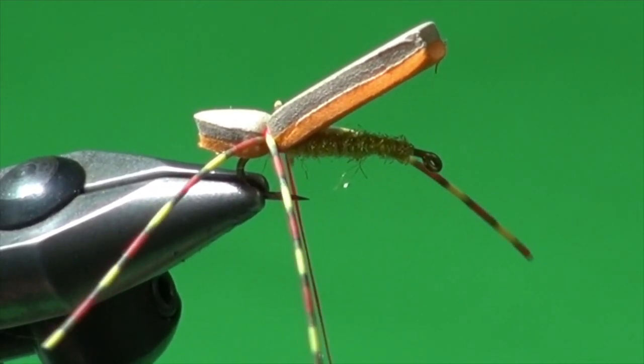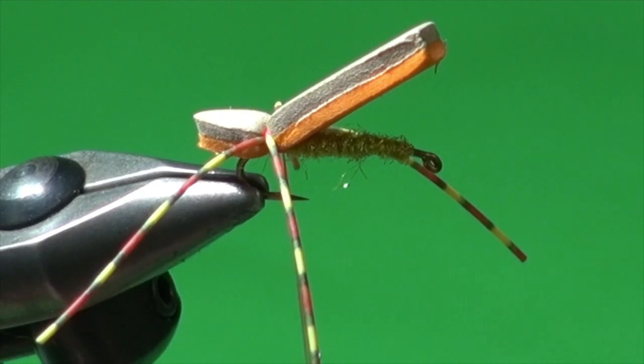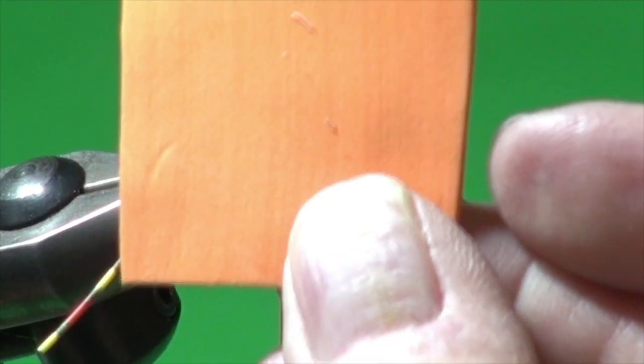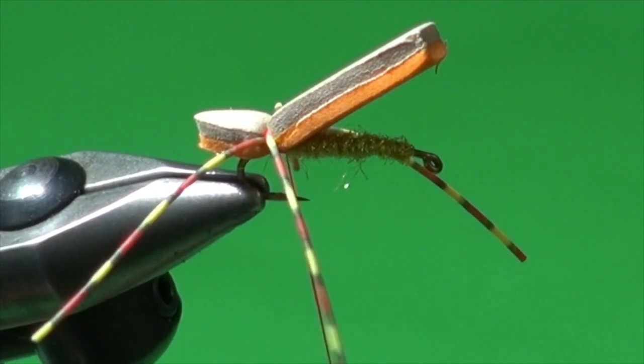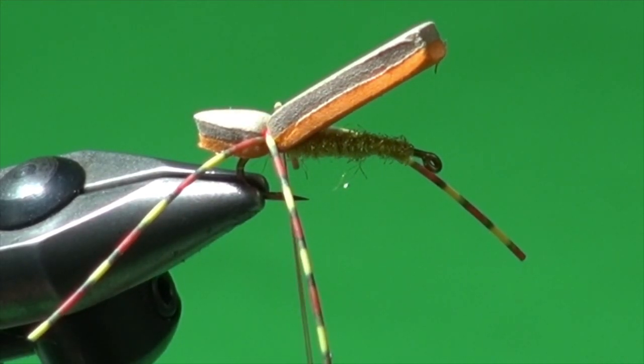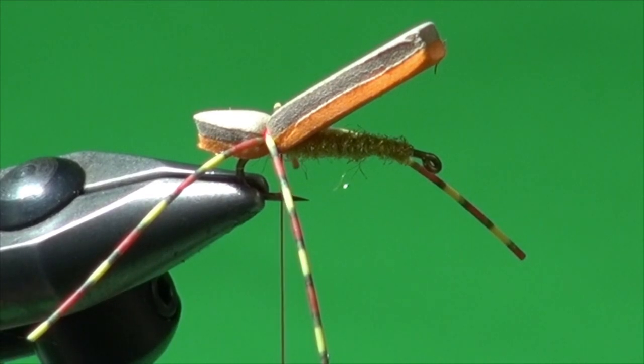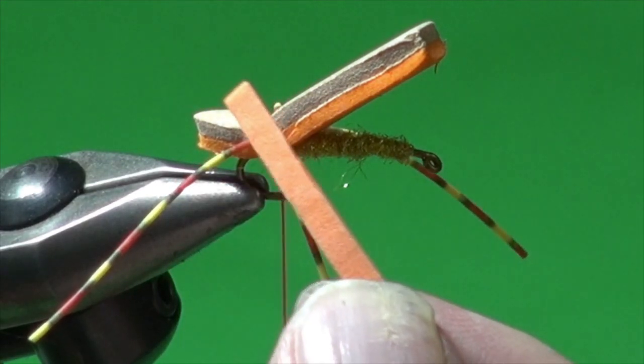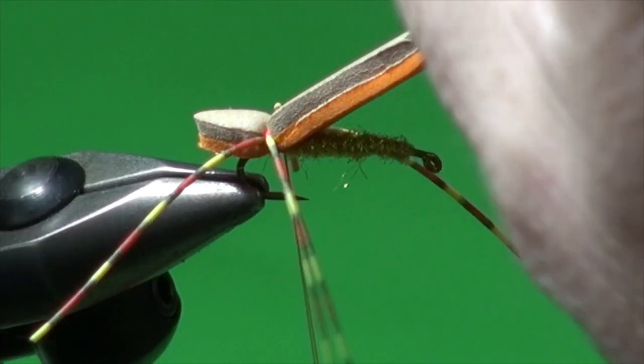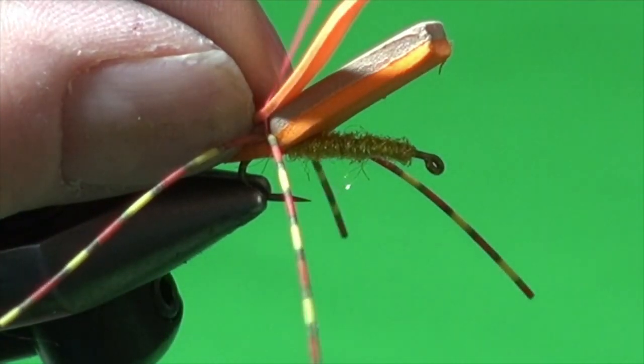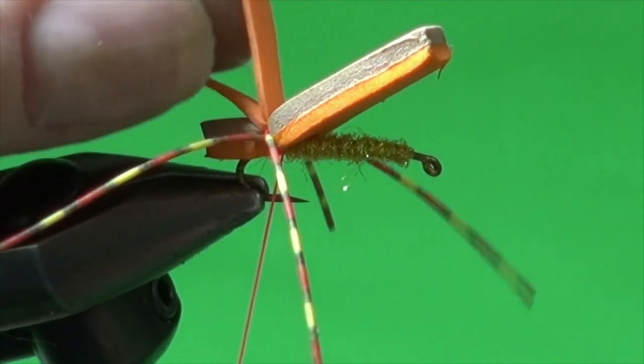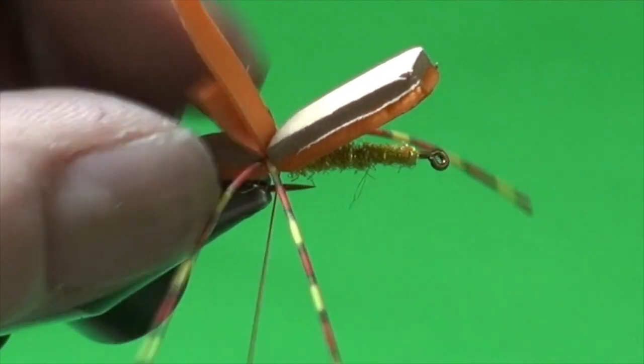And then we're going to take a little section of thin sheet foam. This is like one millimeter razor foam. And we're just going to cut. I've cut a section out, maybe an eighth of an inch wide. And we're going to lay that on top like so and kind of pull down on it. Make sure that's sort of centered.